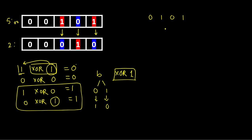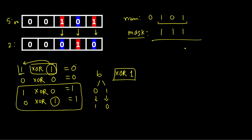Doing XOR with 1 always flips the bit — this is exactly what we need here. Whenever you have a problem requiring bit flipping, think of XOR with 1. XOR with 0 changes nothing — 0 XOR 0 is 0, 1 XOR 0 is 1. So if we XOR our number 101 with a mask of 111, we get 010, which is our solution. The main trick is how to generate this mask.